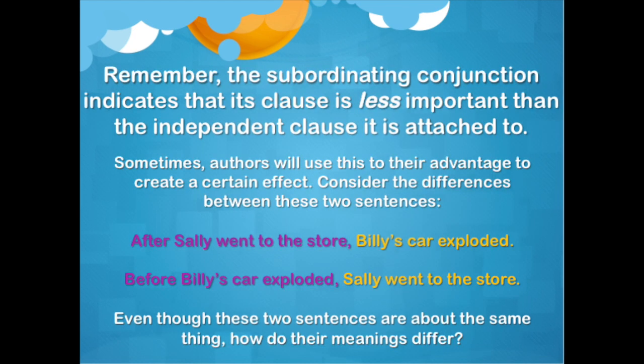Subordinating conjunctions identify some clauses as being less important than other clauses. So if you have an independent clause and a dependent clause, your dependent clause has a subordinating conjunction, which means it is less important than the independent clause that it follows.